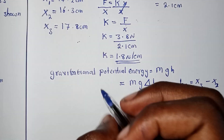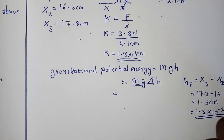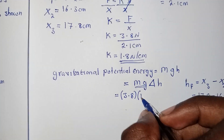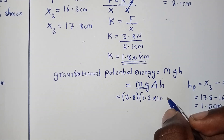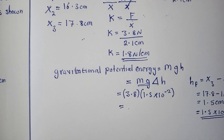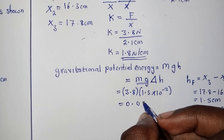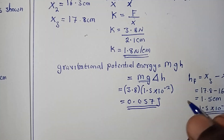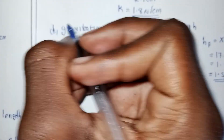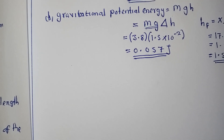This is our length, so now we do the substitution. Remember that mg is the weight, so we can replace it with 3.8 newtons — you must be able to reason in those directions to understand physics well. So we multiply: 3.8 × 1.5 × 10⁻² and we get 0.057 joules. That was for part b — calculate the change in gravitational potential energy.